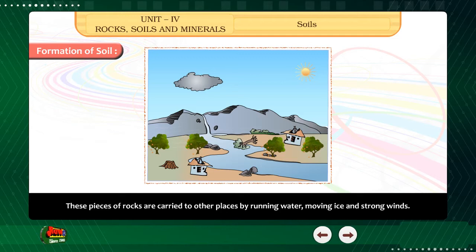Constituents of Soil. Soils of different places on the earth differ from one another. Most of the soil contains coarse particles of gravel, small pieces of stones, sand particles, clay particles, humus, moisture and air. Let us prove by doing some experiments.